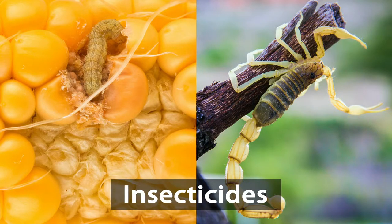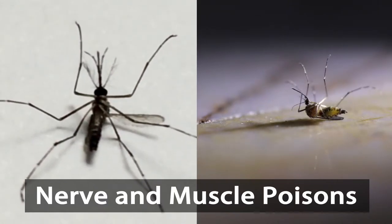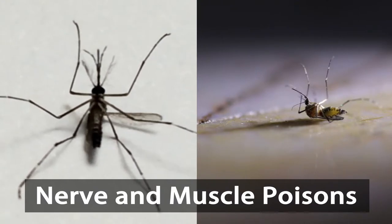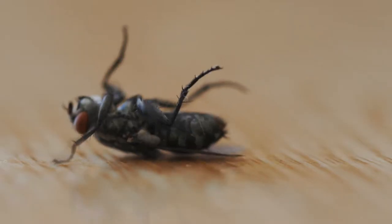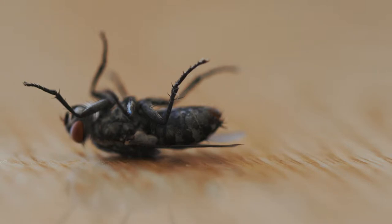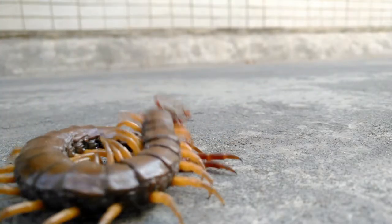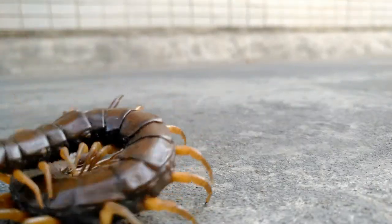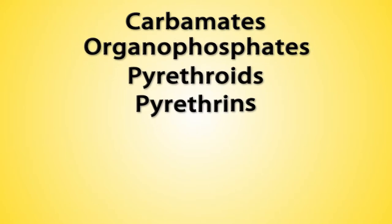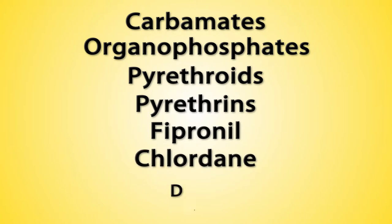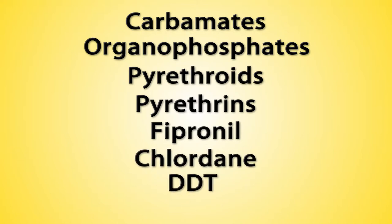Insecticides control insects and other arthropods. Nerve and muscle poisons in insecticides disrupt, inhibit, block, terminate, or activate various channels, enzymes, and receptors within pests. Examples include carbamates, organophosphates, pyrethroids, pyrethrins, fipronil, chlordane, DDT, and neonicotinoids.